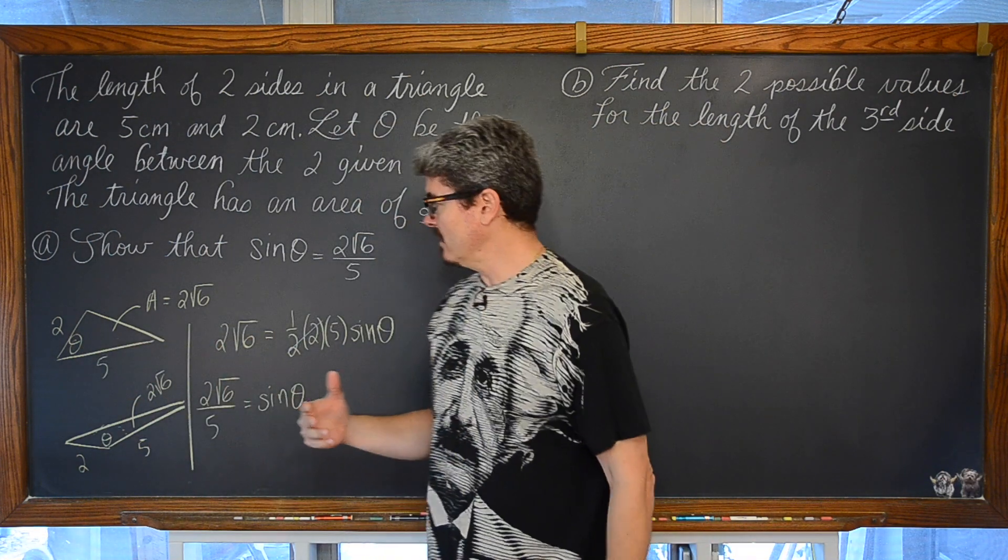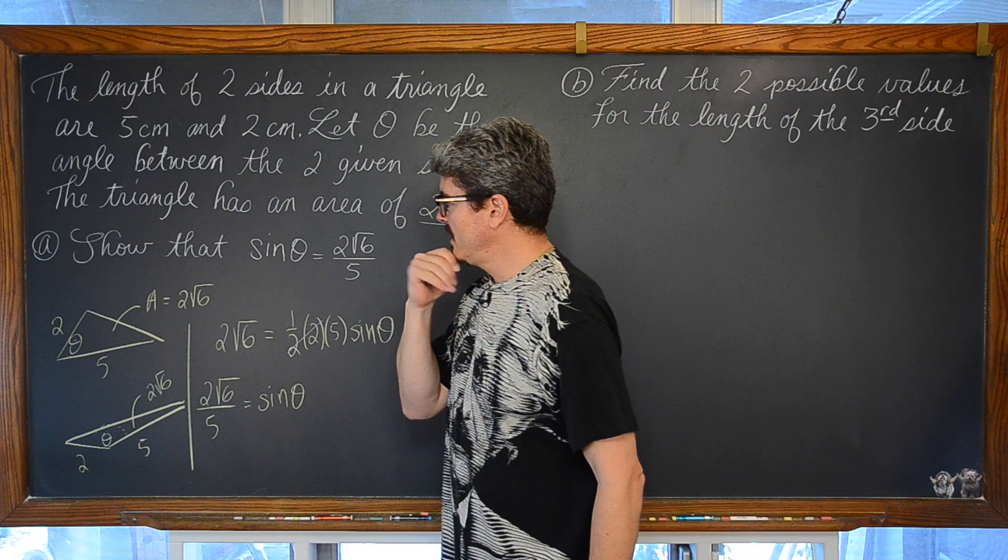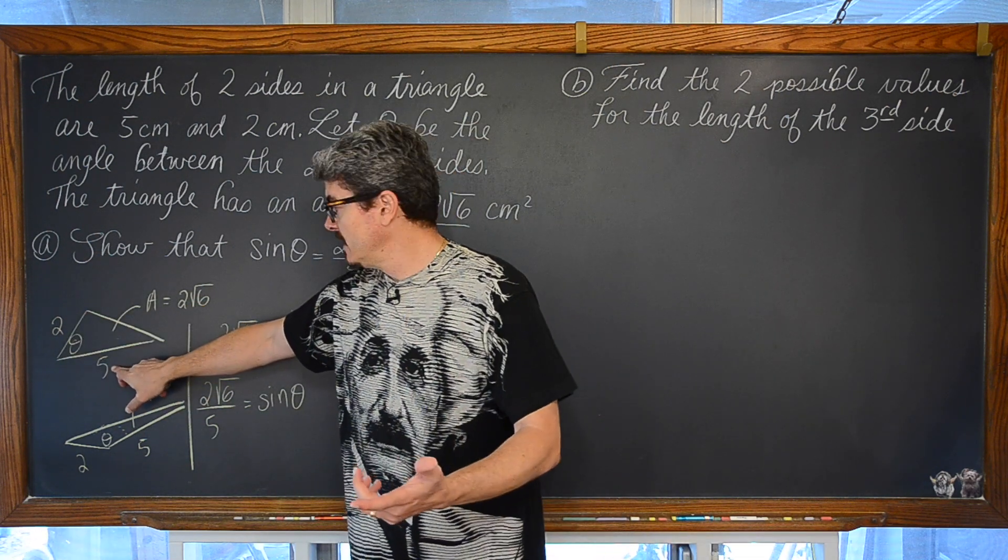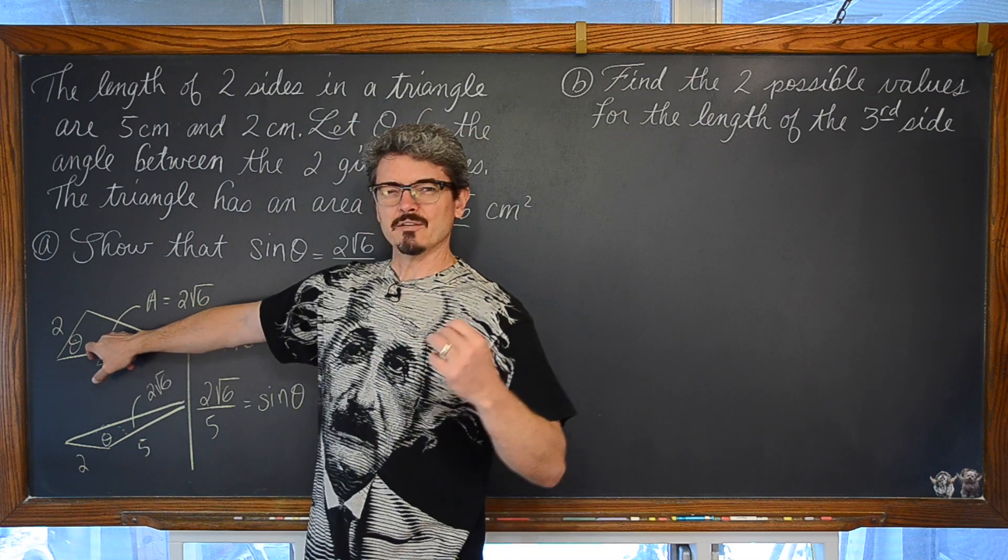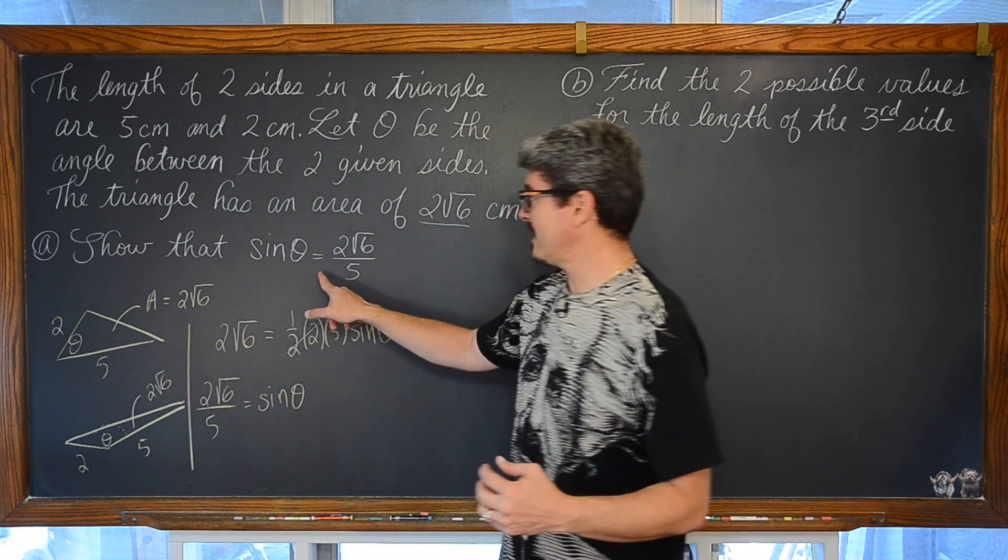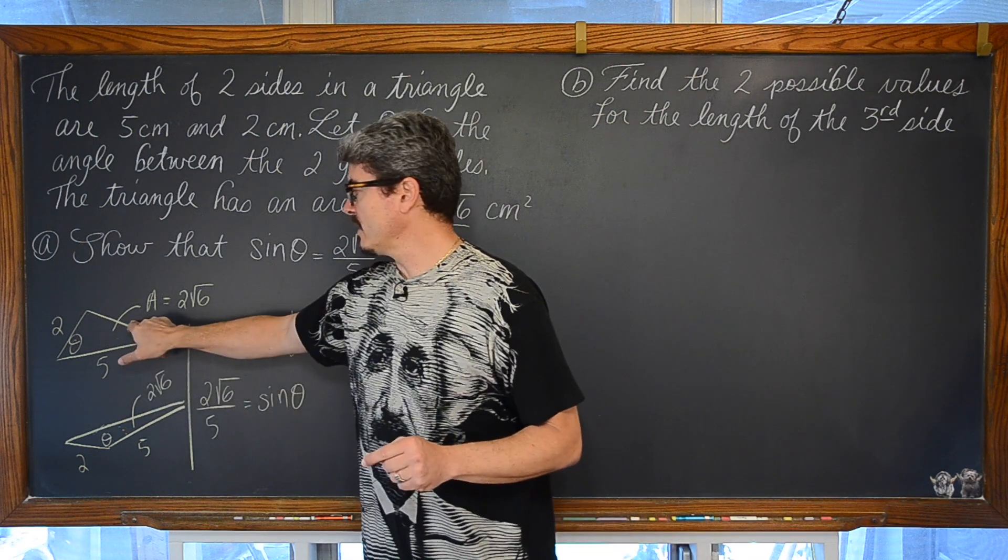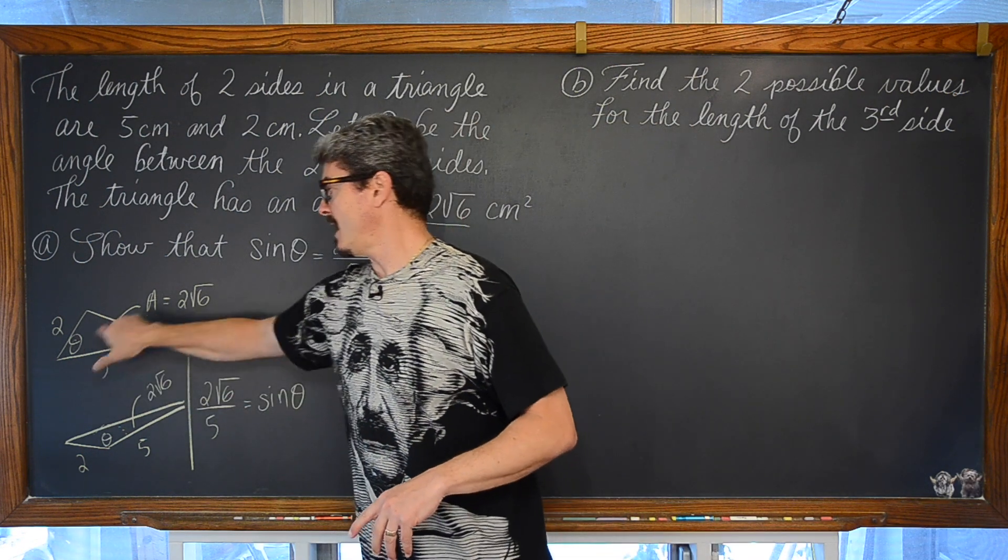Well, look at what we have here. We have a triangle with a known side of 2, a known side of 5. We are working with some kind of angle. We know something about it. The sine of that angle is 2 square root of 6 over 5 and we are looking for the missing side opposite that angle.